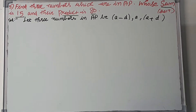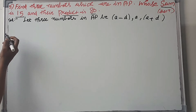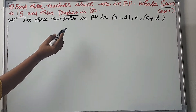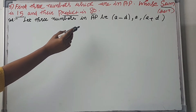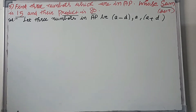First question: find three numbers which are in AP whose sum is 15 and their product is 80. This is a 2017 exam question on AP. So let three numbers in AP be A minus D, A, and A plus D.